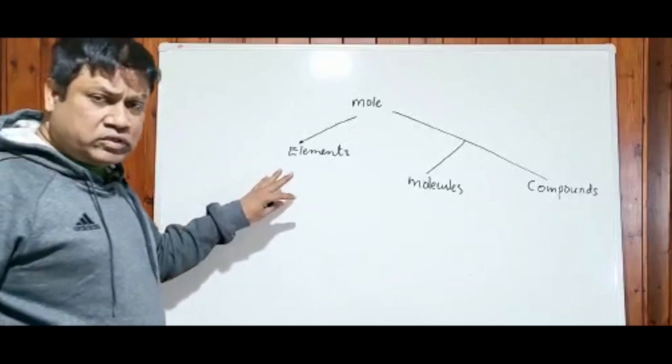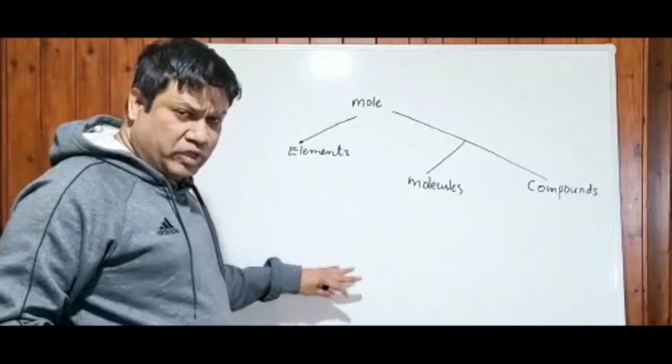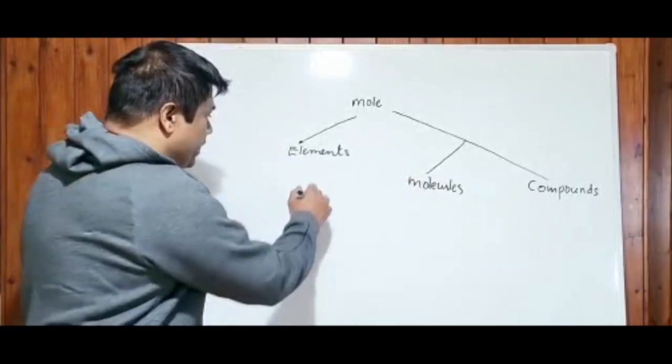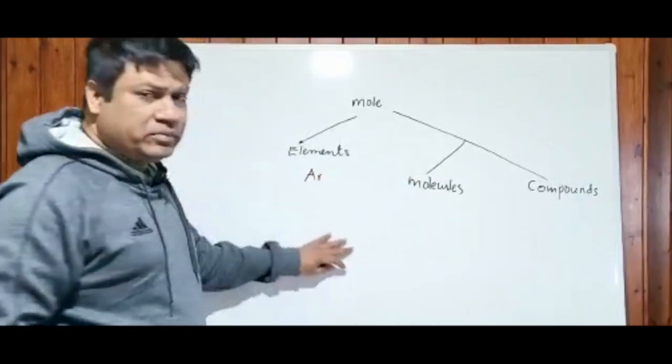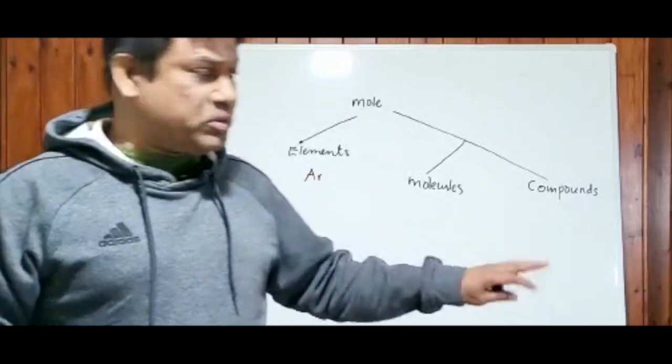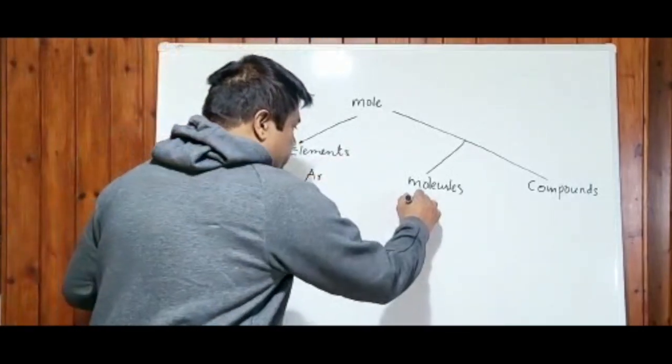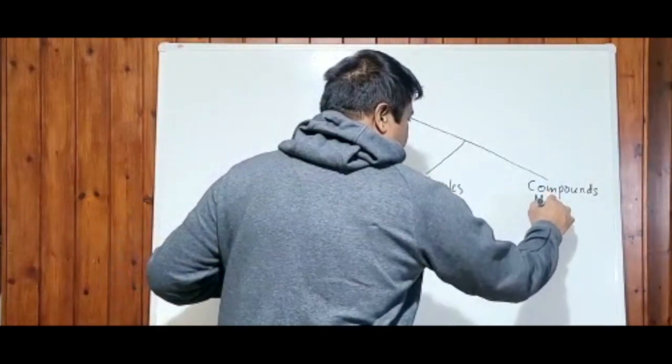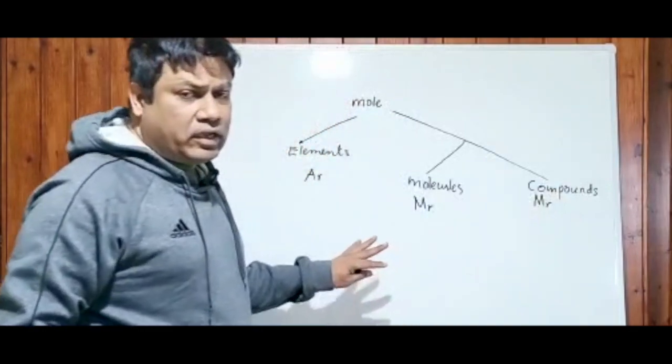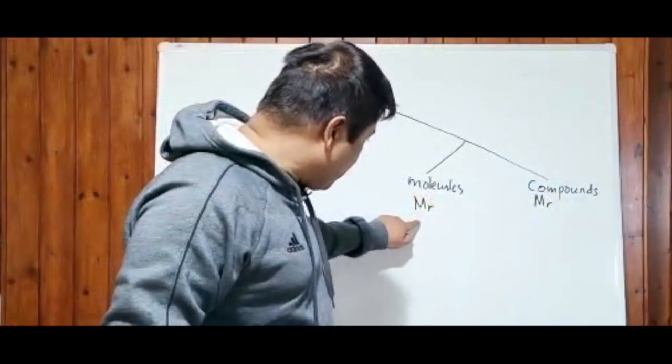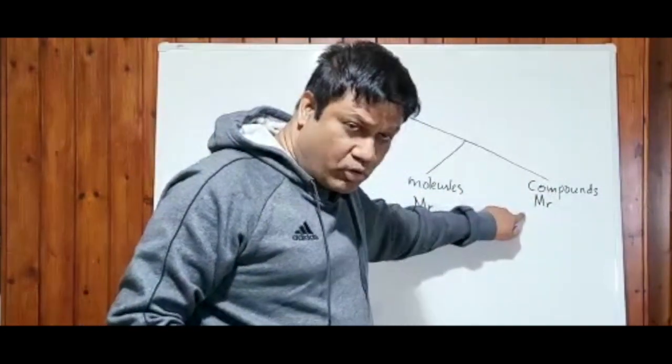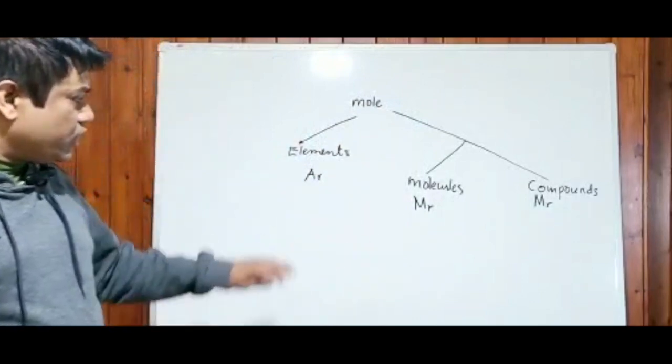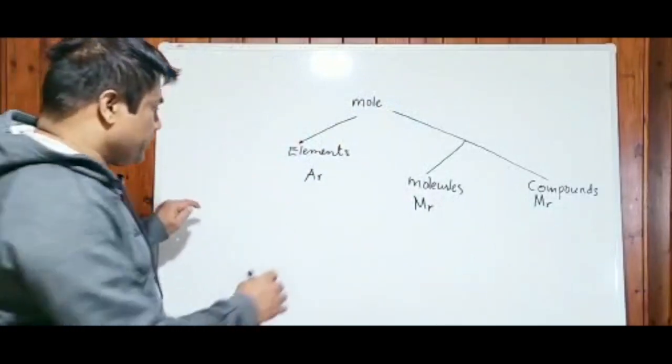For elements, I already taught or discussed with you that elements are always in monoatomic form, so we use the term AR, which is nothing but relative atomic mass. And for molecules we are using the term MR. For compounds also we are using the term MR. I already taught you how to work out the MR of molecules and MR of the compounds in my previous videos.